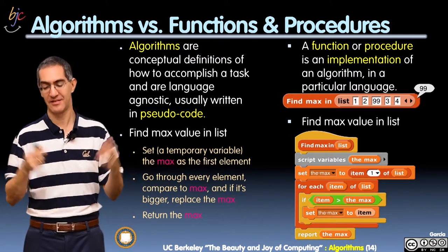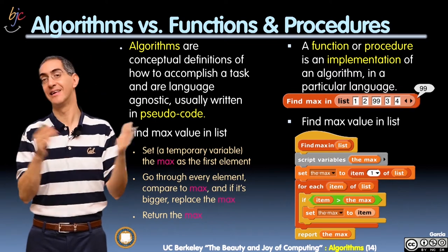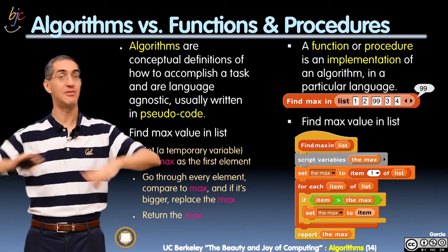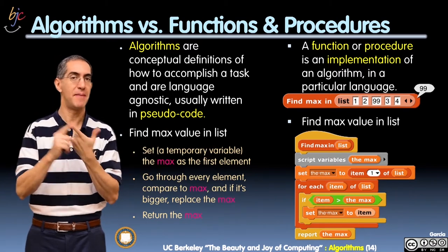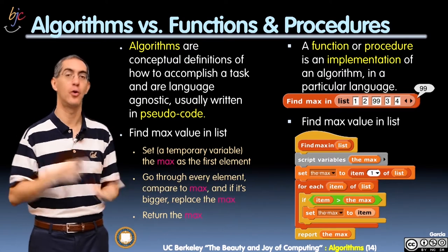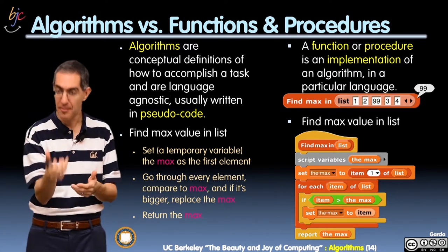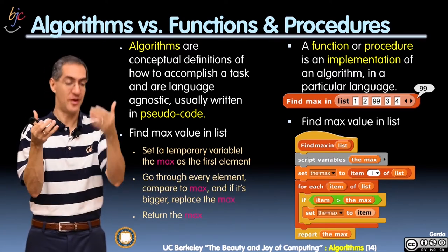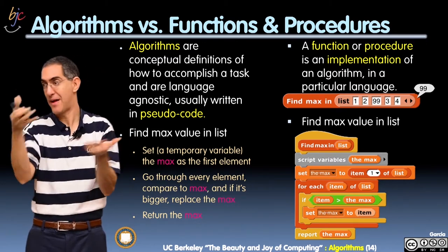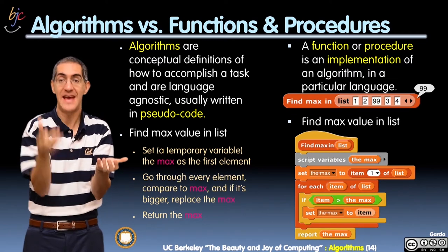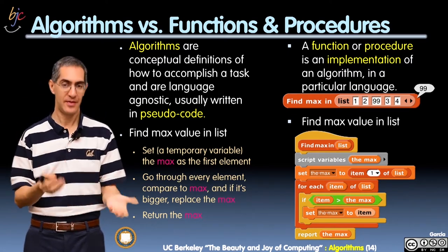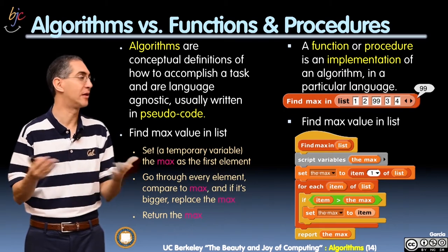The example I gave is find max in a list, and there's the algorithm for doing that. Set a temporary variable — remember, this is language independent. Set a temporary variable, max, to be the first element of the list. Go through all the elements, comparing your temporary best so far with every element. When every element you're grabbing is bigger than your temp so far, make temp so far that element. Keep doing that. When you're all done, return the temp so far — the max so far. That'll be your max in a list.